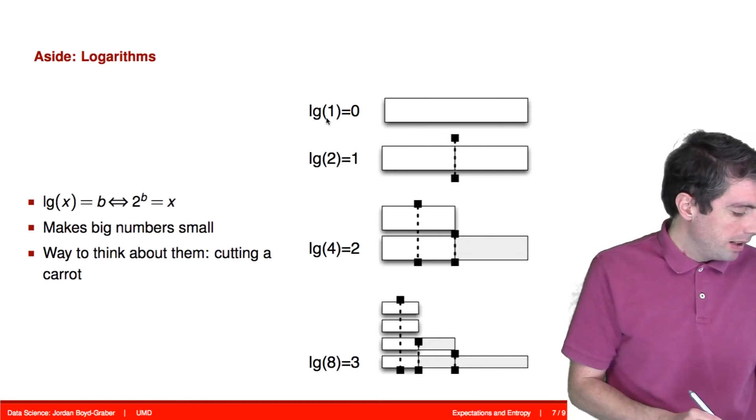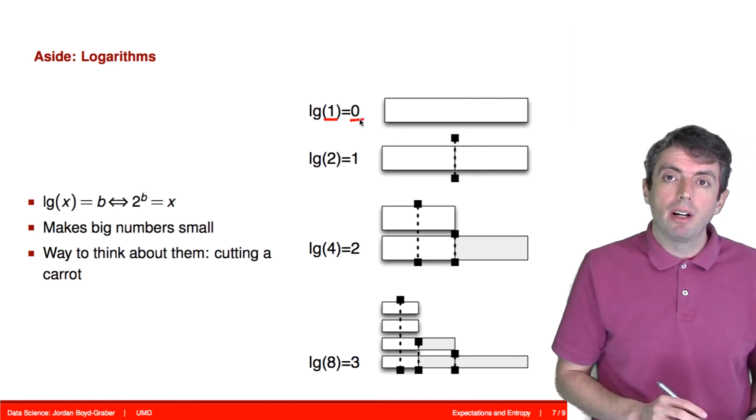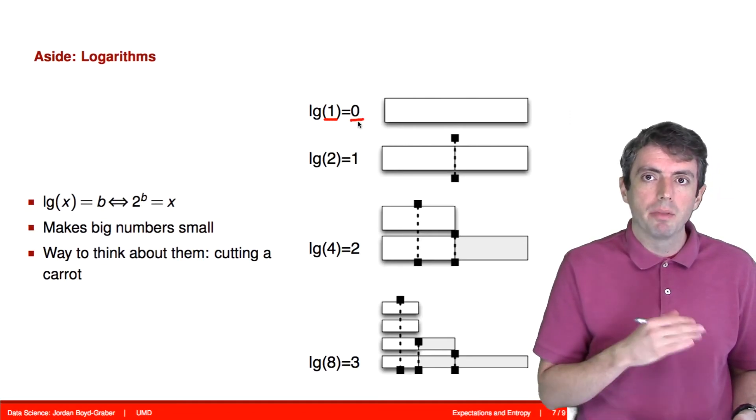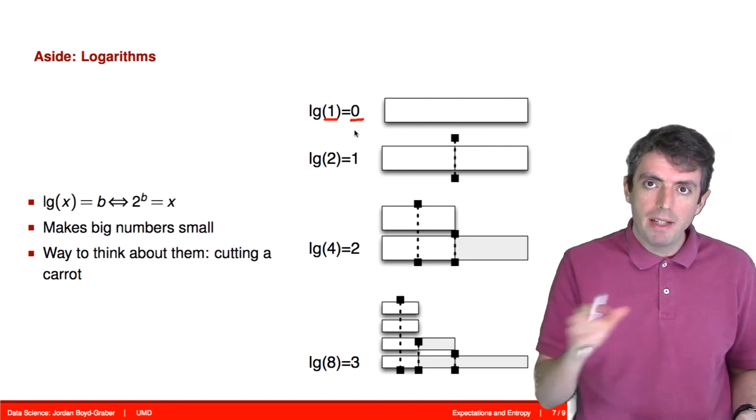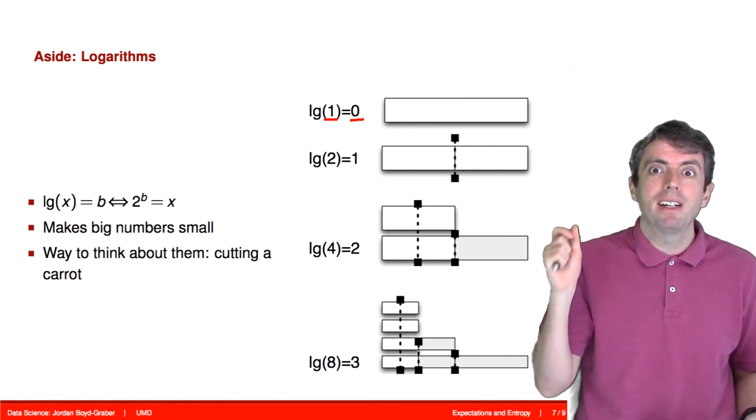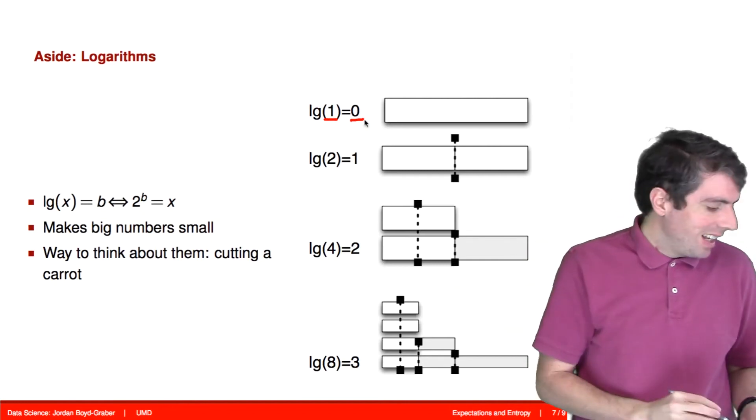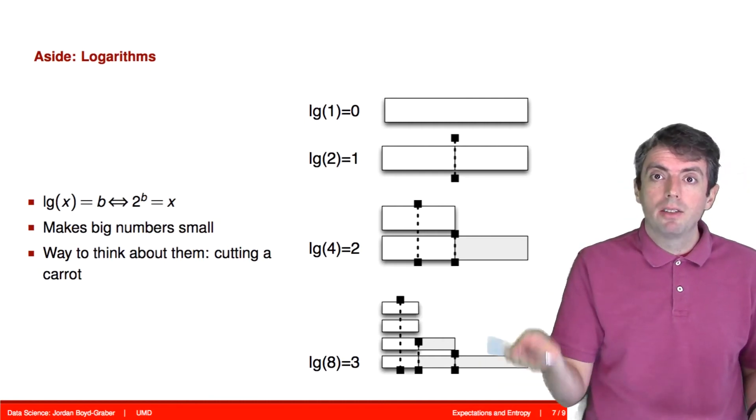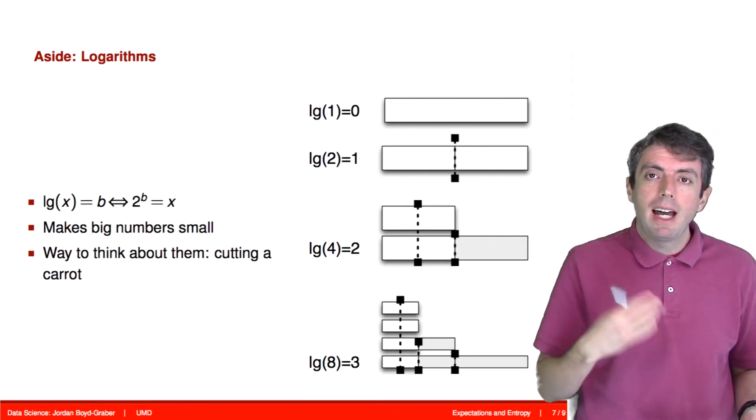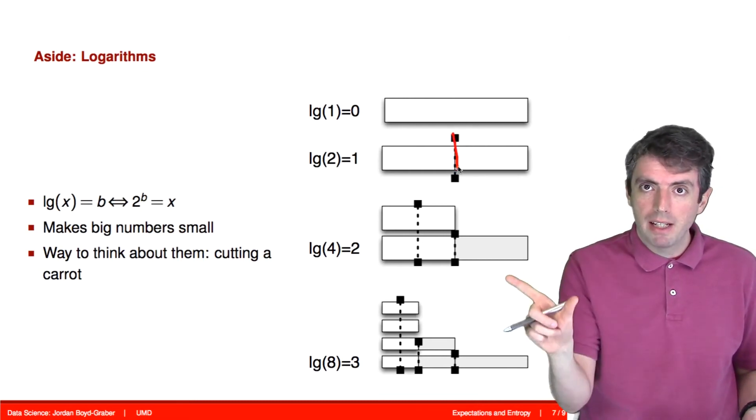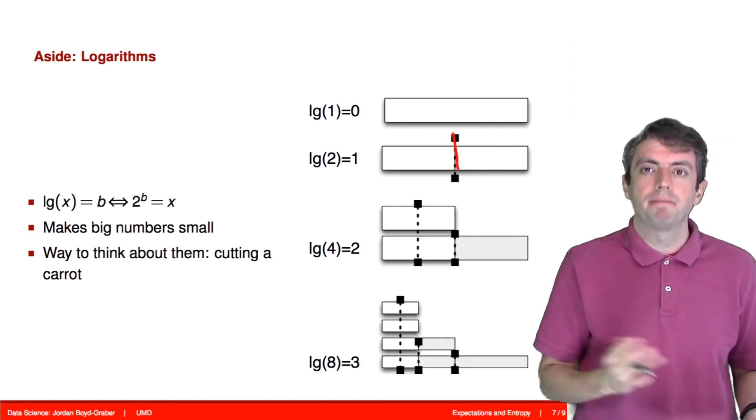Let's talk about logarithms of base 2. The logarithm of 1 in base 2 is 0. One way of intuitively thinking about logarithms is how many times would you have to cut a carrot to get that number of pieces. If you want one piece of carrot, you have to cut a carrot zero times to get one piece of carrot, because that original carrot is one piece of carrot. The base 2 logarithm of 2 is 1. If you want to get two pieces of carrot and you have a carrot, how many times do you need to cut the carrot to get two pieces of carrot? You need to cut it once. You cut a big carrot in half, you get two pieces of carrot.